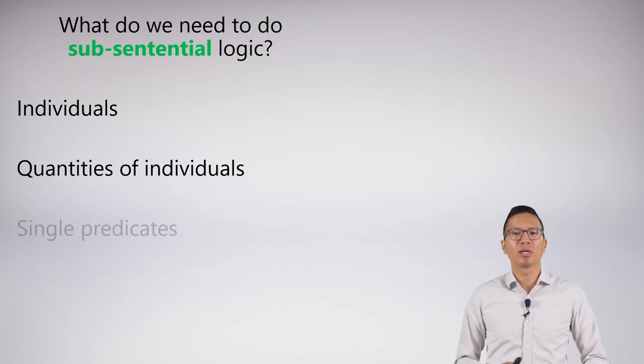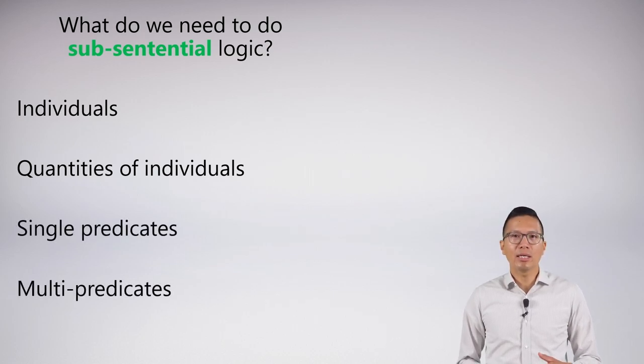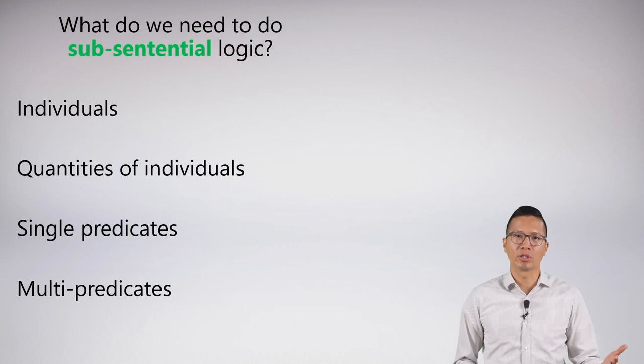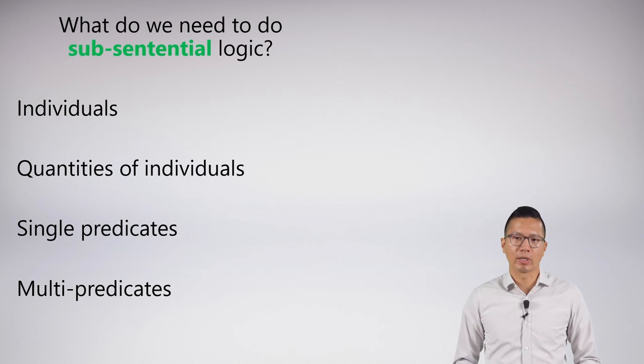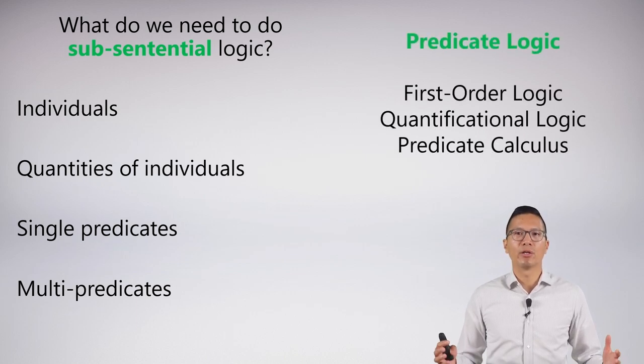So what do we need to do sub-sentential logic? We actually need to add a lot of things to our sentential logical system. So we need a way to express individuals and quantities of individuals like we just saw. And we need a way to understand and express single predicates and multi-predicates. And when we put this all together, we get what is called predicate logic.